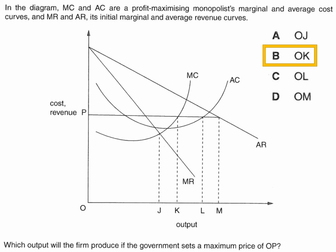We're introducing a price cap into the market. If you introduce a price cap at P, effectively across that price line, average revenue equals marginal revenue. For each extra unit sold, they're going to get the same price up to the point where that price line meets the average revenue curve. So across that line, average revenue through to output M will be the same as marginal revenue. Thereafter AR and MR will diverge, but that's not relevant to the question.